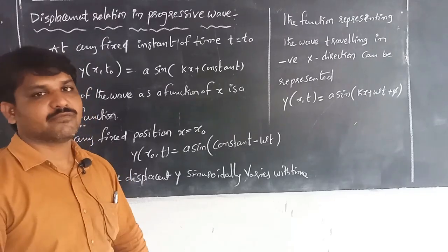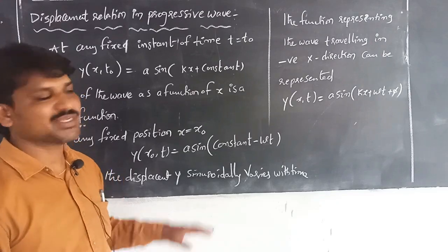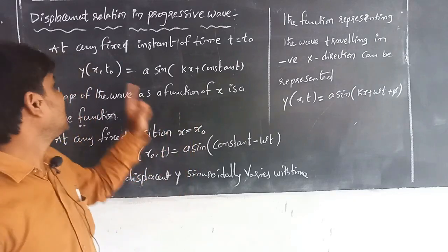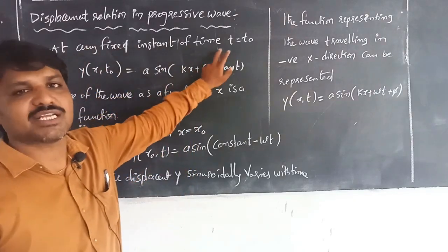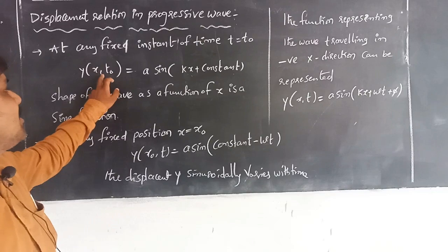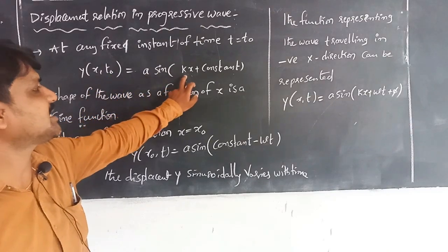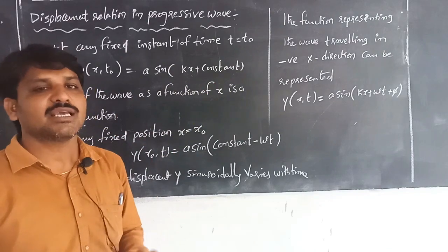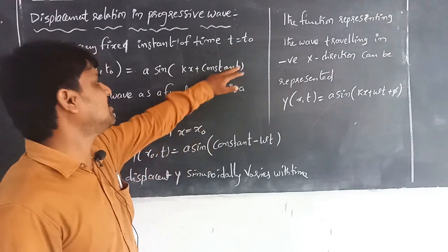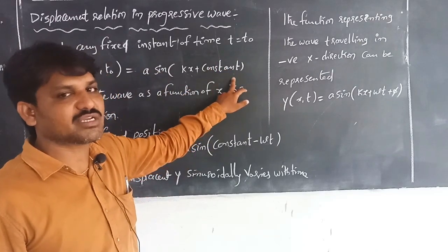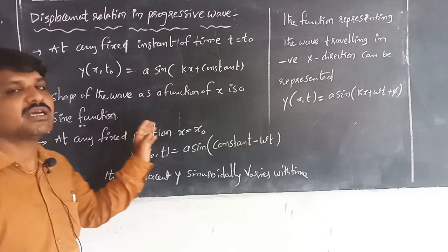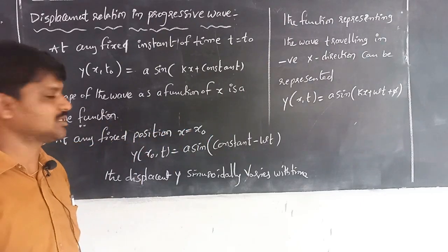The wave displacement relation for a progressive wave is y(x, t) = A sin(kx − ωt + φ). At any fixed instant of time t = t₀, the displacement relation becomes y(x, t₀) = A sin(kx + constant), since the term (ωt + φ) becomes a constant. The shape of the wave as a function of x is a sine function.